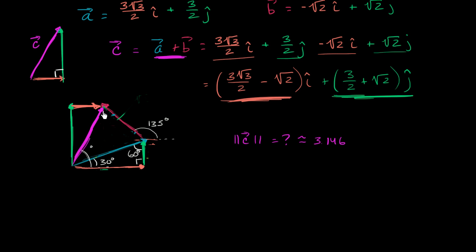And that makes sense: vector a had a magnitude of 3, and visually this vector c looks a little bit longer than that, which is consistent with what we computed.